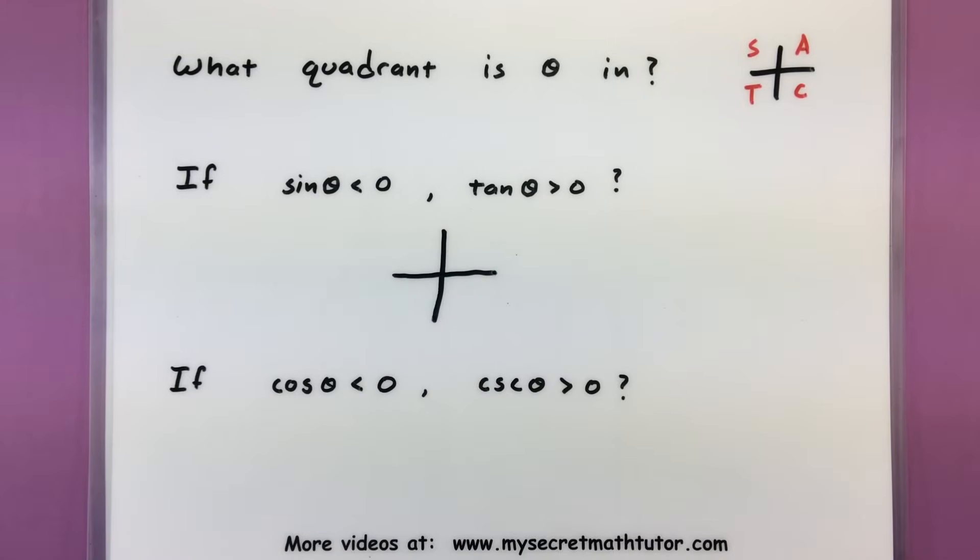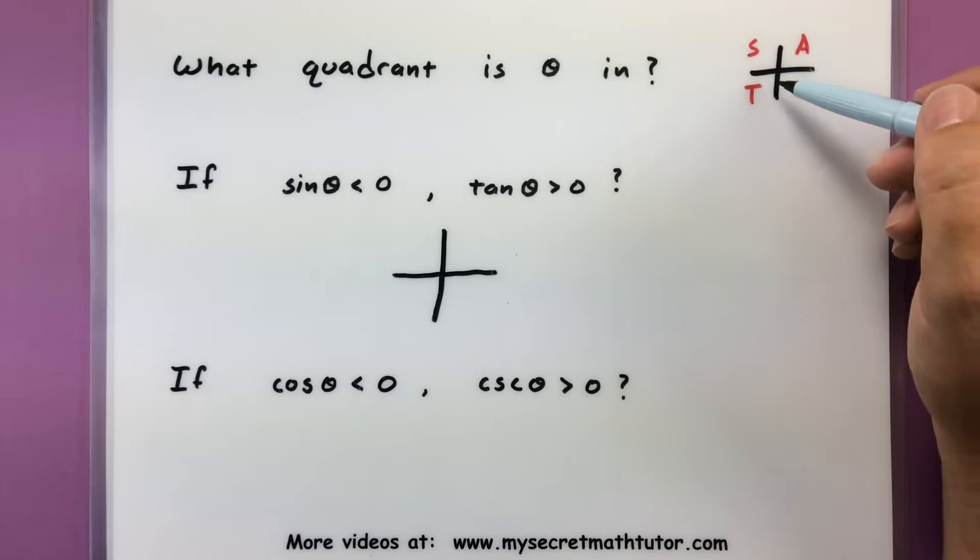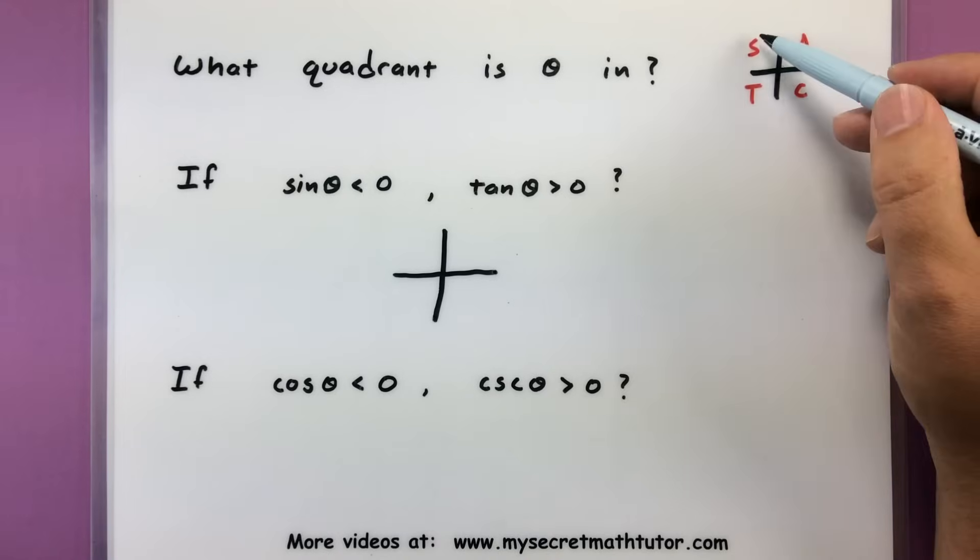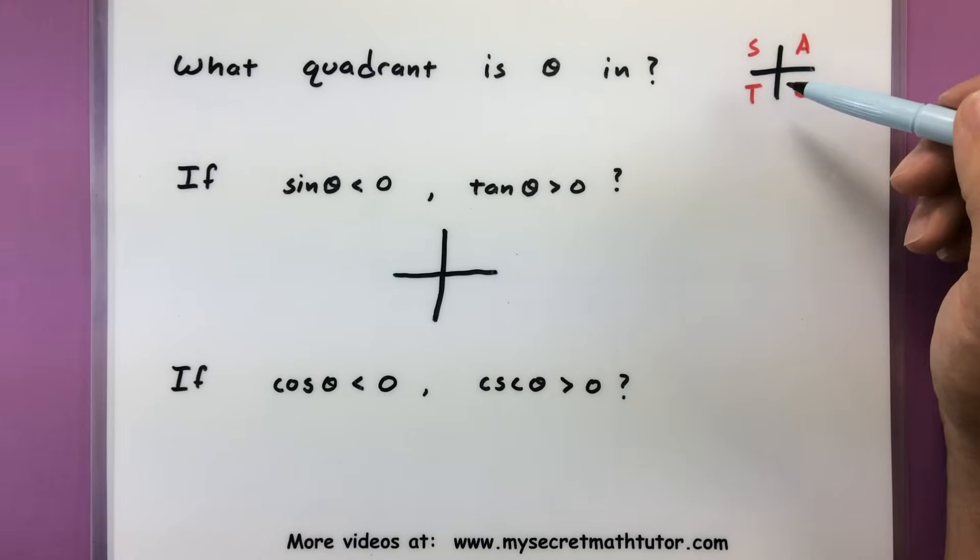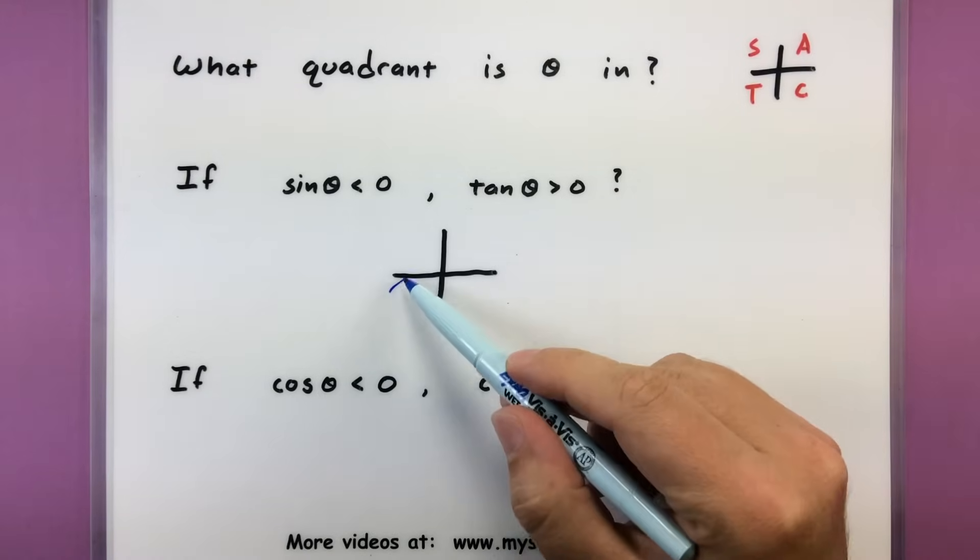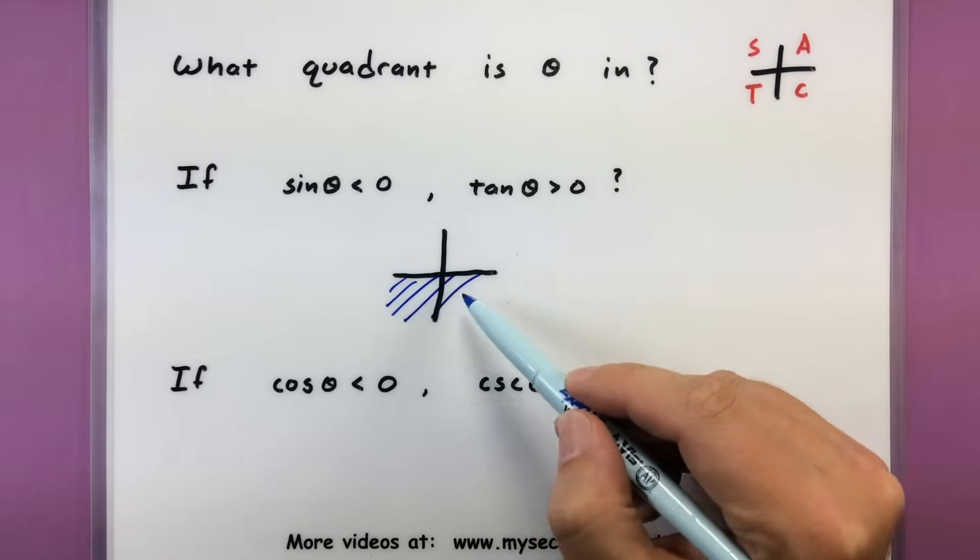Well, if I know that sine is negative, then I immediately can rule out the first and second quadrant, because in the first quadrant everyone's positive, and in the second quadrant sine is positive. I specifically know it's negative, so it's got to be on this lower half here. I'm going to shade that in. So far, our angle has to be down here somewhere.